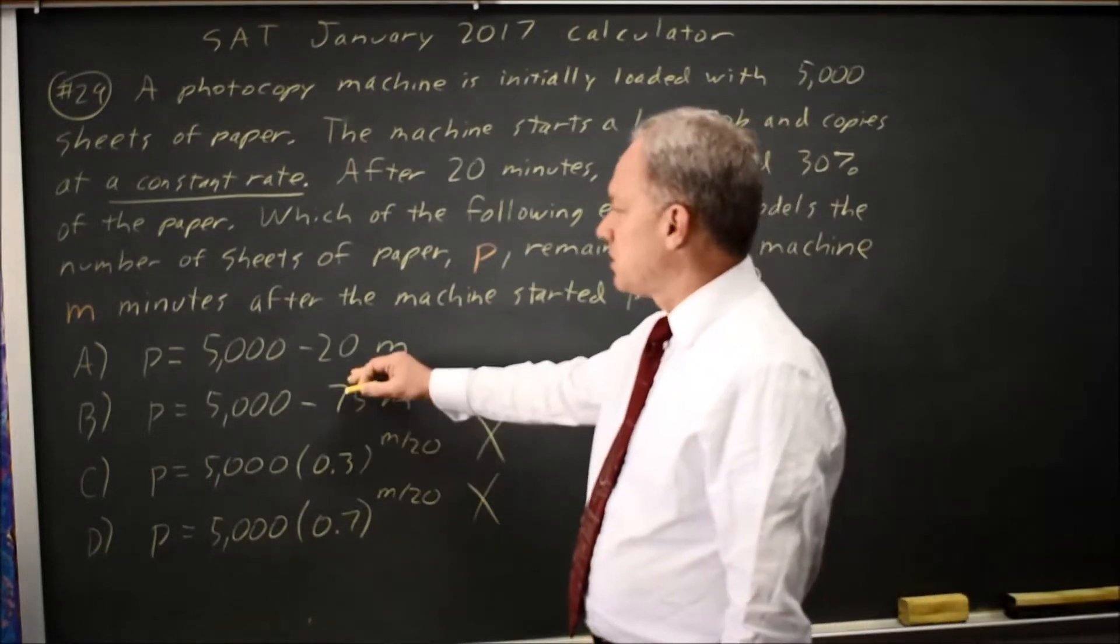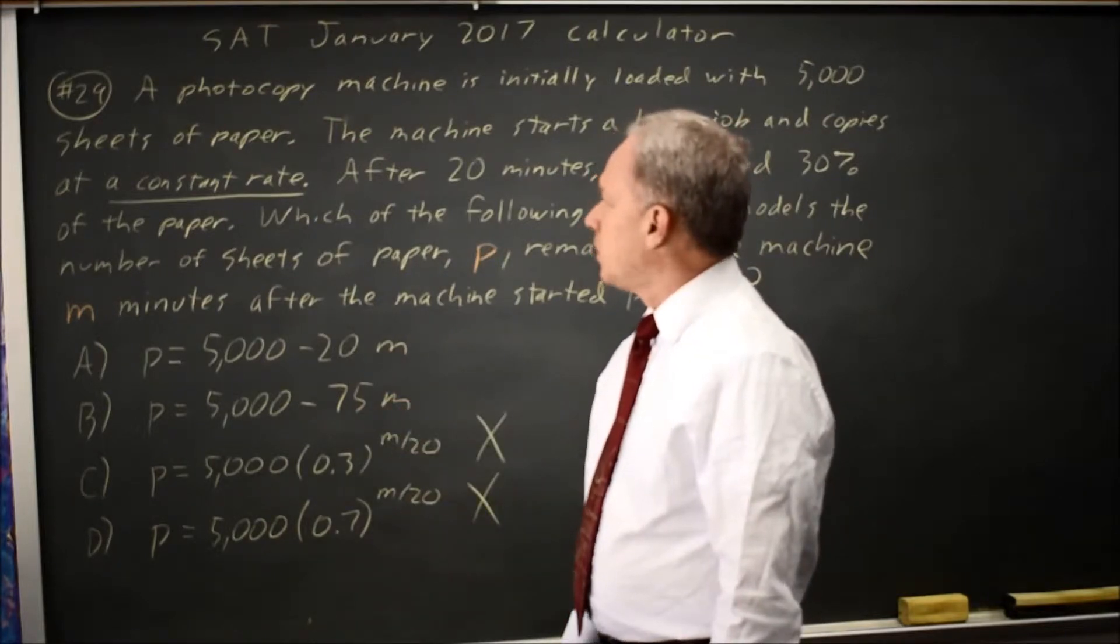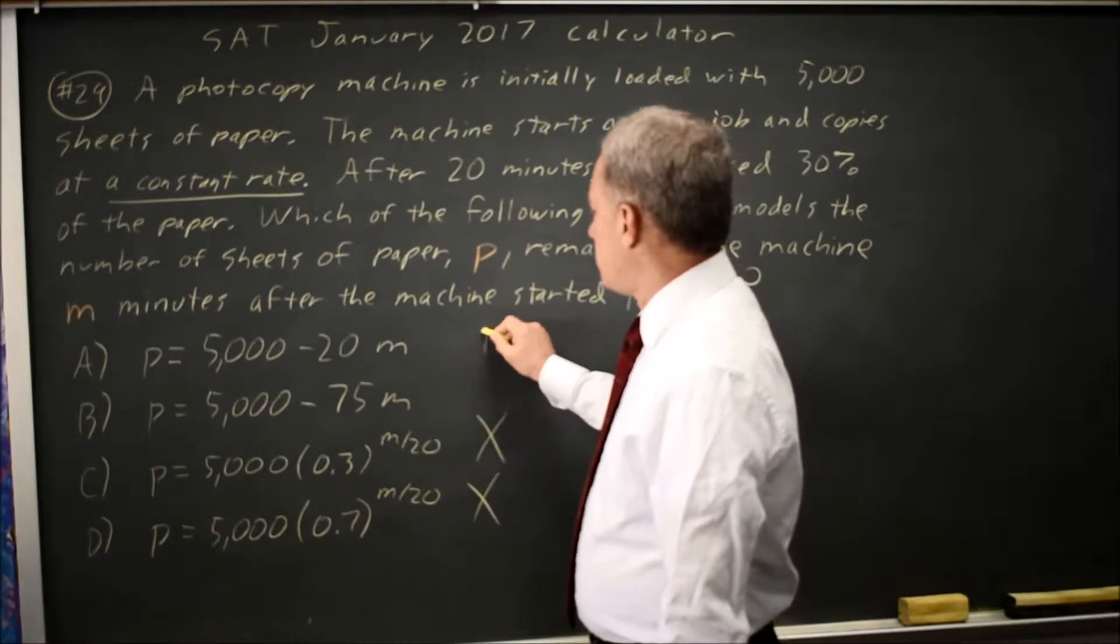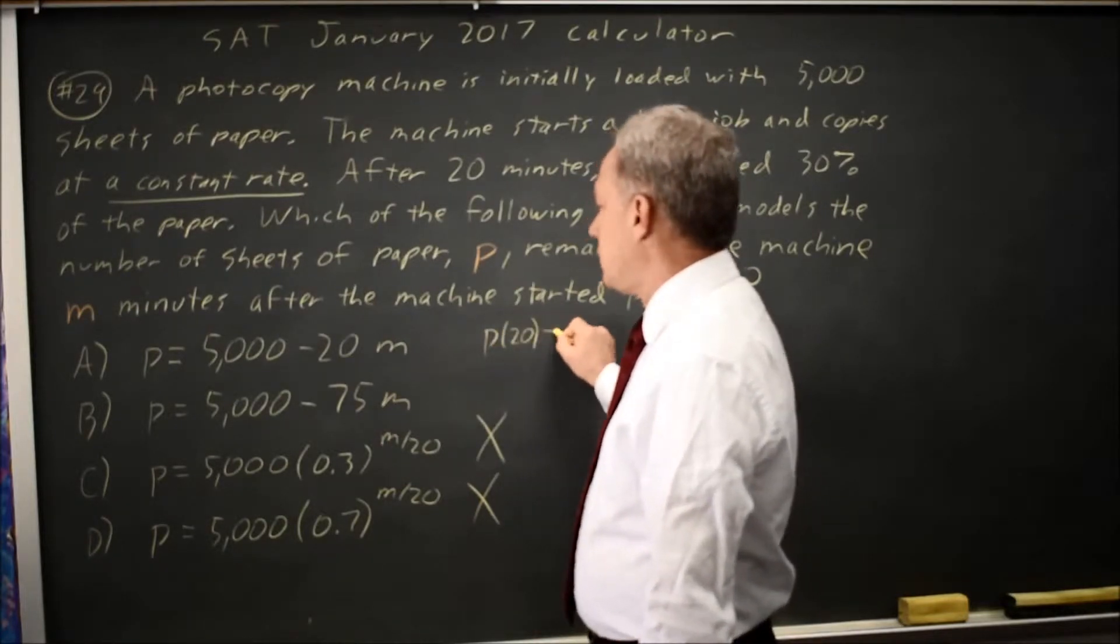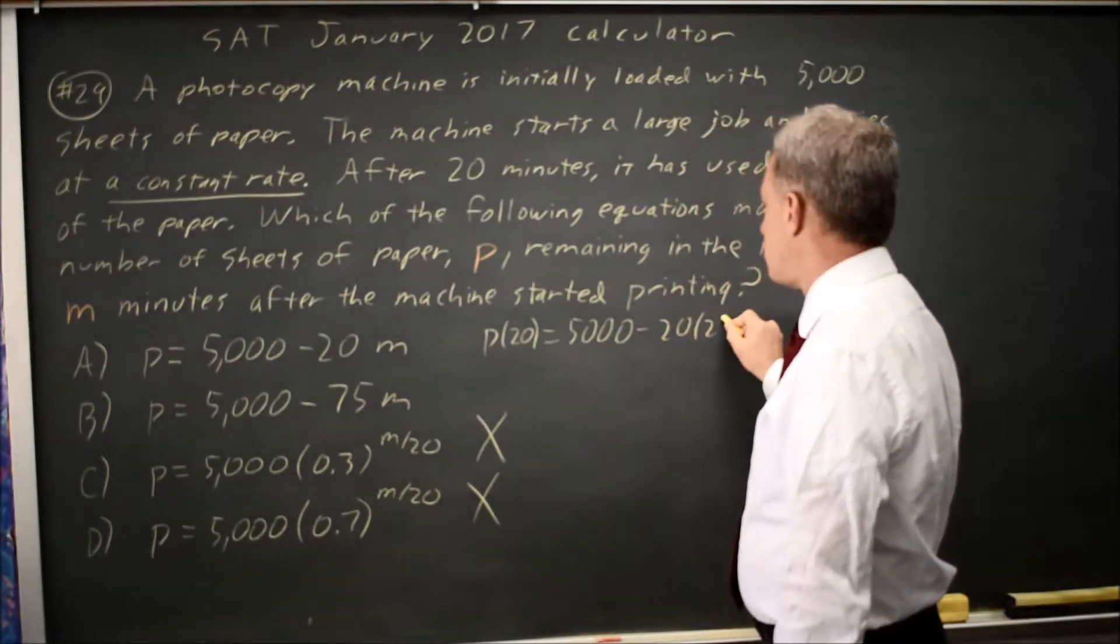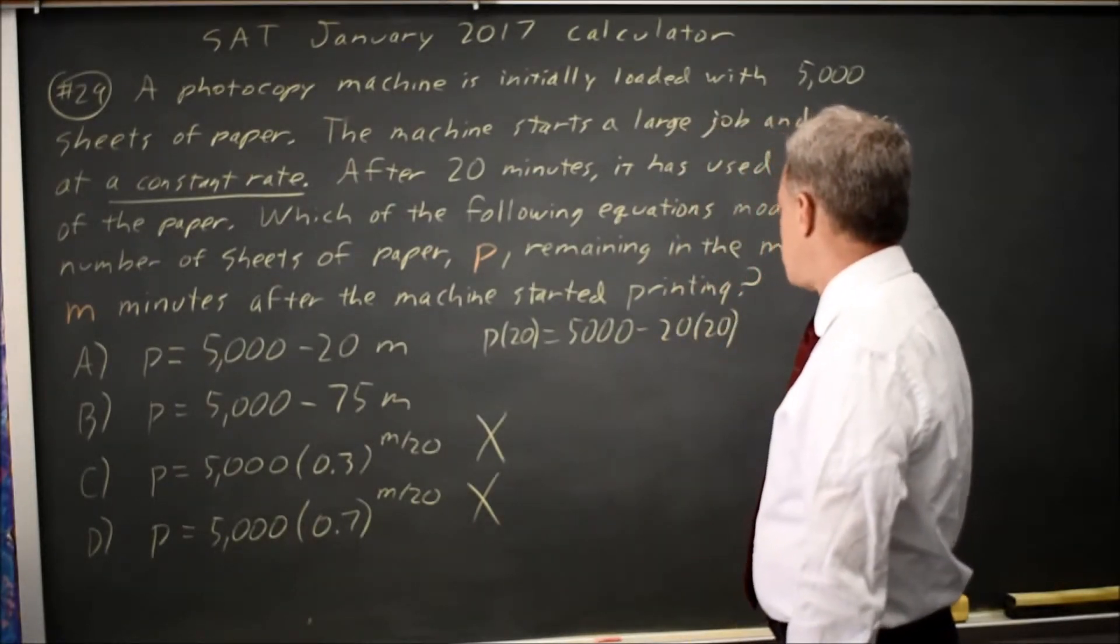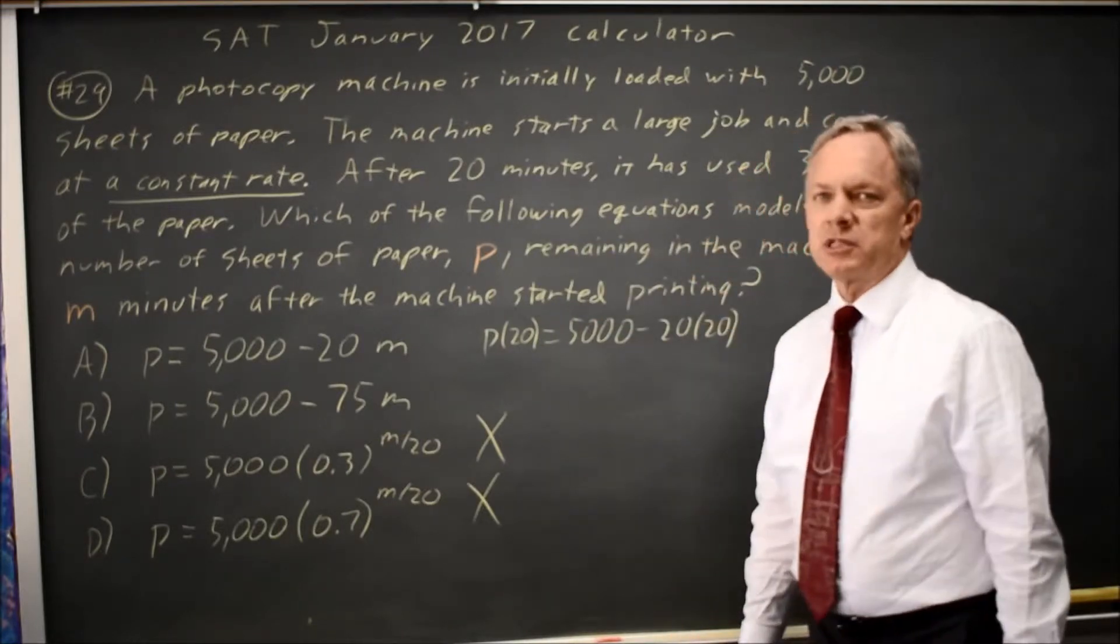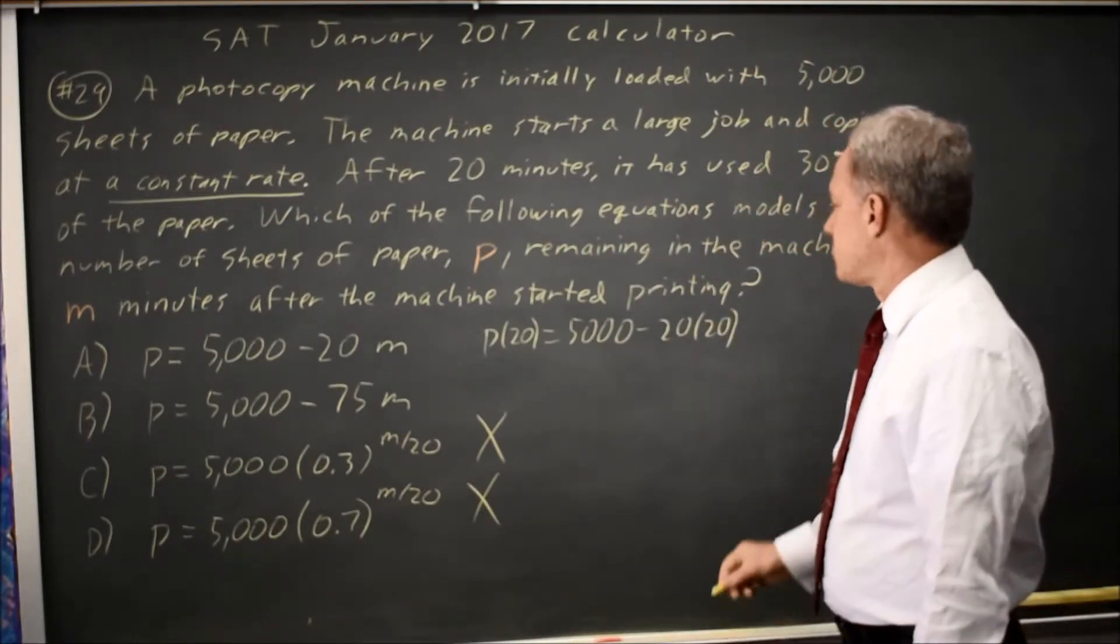So the question is, is this A or B? If you put in M equals 20, you get P at time 20 equals 5,000 minus 20 times 20, which is minus 400. But we've used 30% of our paper, which is 1,500 sheets, so this is not correct.